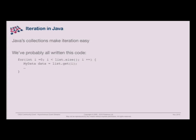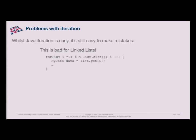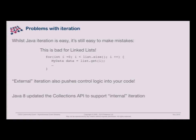We've all written code with for loops, and hopefully many of you can use Java 5's enhanced for-each. The problem with these is it's easy to make a mistake. For example, using index-based iteration over a linked list is really bad because you're iterating all the way through the elements to find the ith element each time, doing far more work than needed. You've also got control logic making a mess of otherwise clean code. This is why Java 8 added Collections API support for internal iteration — these are the things they wanted to improve, and this is where the Streams API comes in.